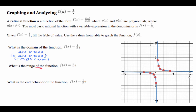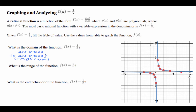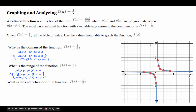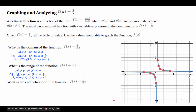Now let's look at the range — it's very similar to the domain. The range is the y-values. Y can be anything except y cannot be zero. So y is greater than zero or y is less than zero, but not zero. In interval notation, that's negative infinity to zero union zero to positive infinity. That union sign means 'or', so you can use them interchangeably.